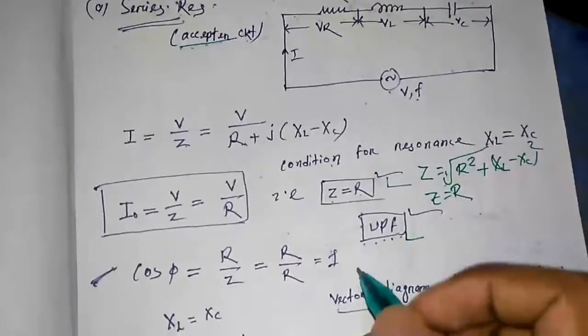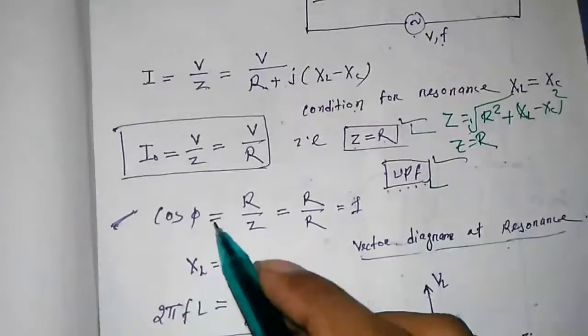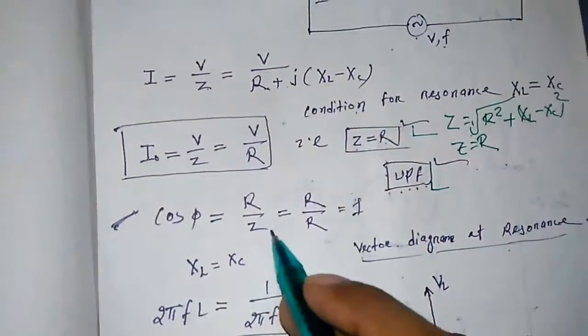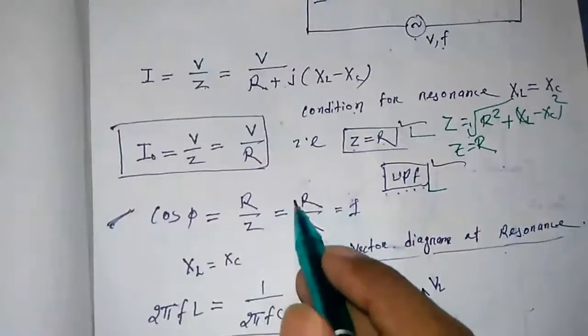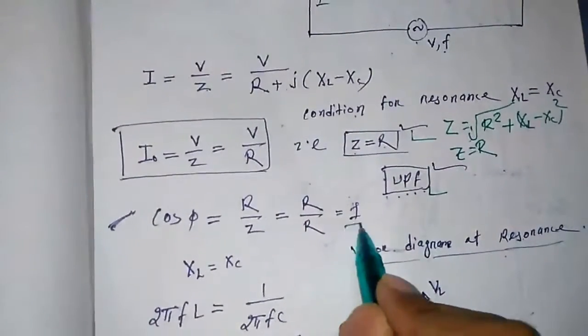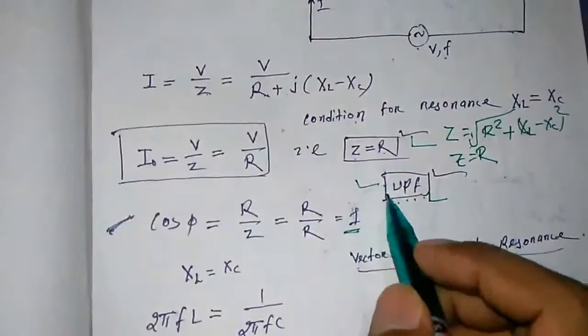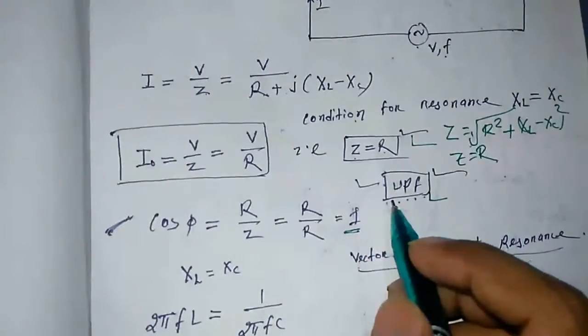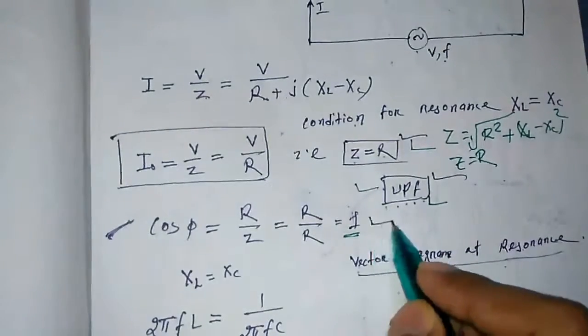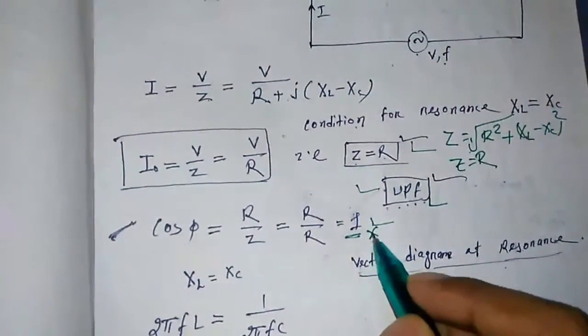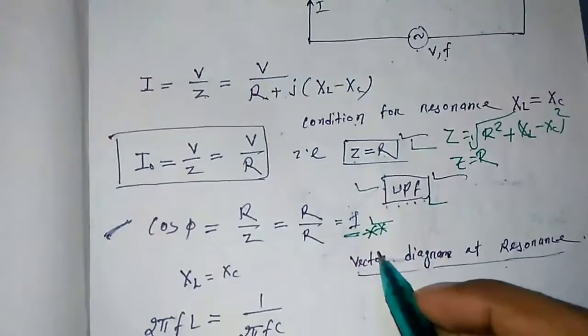Next calculating the cos phi, that is power factor is equal to R upon Z. Here Z equal to R, that is R upon R, so this is one. We found that in case of a resonance circuit, the power factor is unity. This is very important. It comes in most of the MCQ questions in the exam.